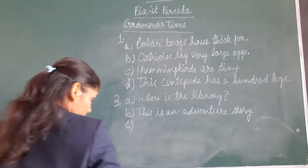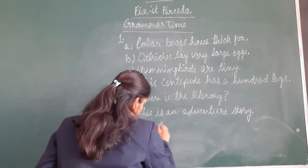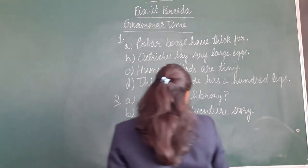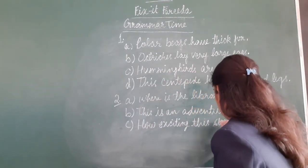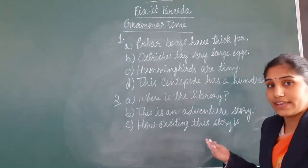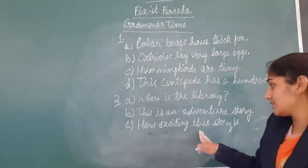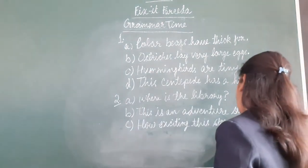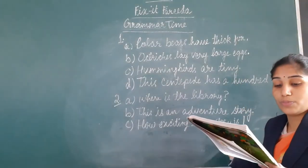Part C: 'How exciting this story is!' Children, here we are expressing our feelings that this story is exciting. So we will put an exclamation mark, as this is an exclamatory sentence.